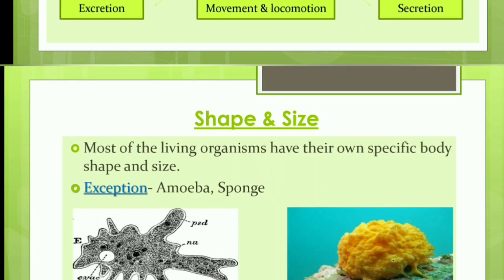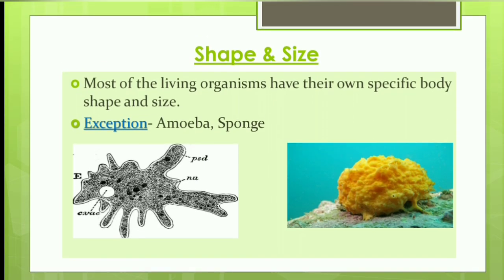The first characteristic is shape and size. Most living organisms have their specific body shape and size, though there are some exceptions like amoeba and sponge, which do not have a specific body shape and size.